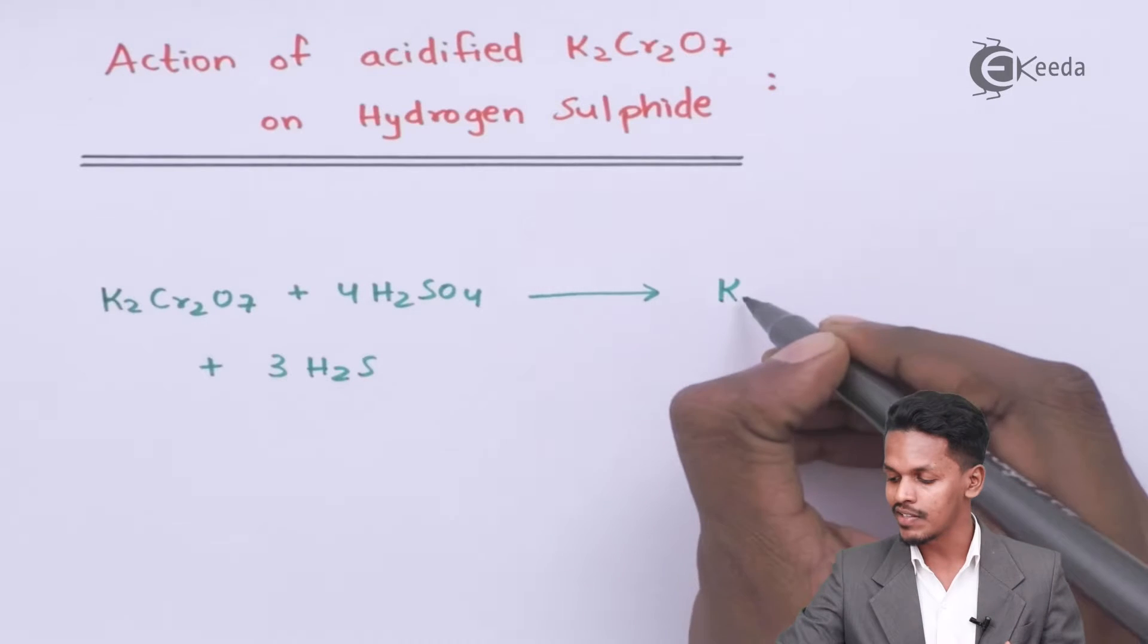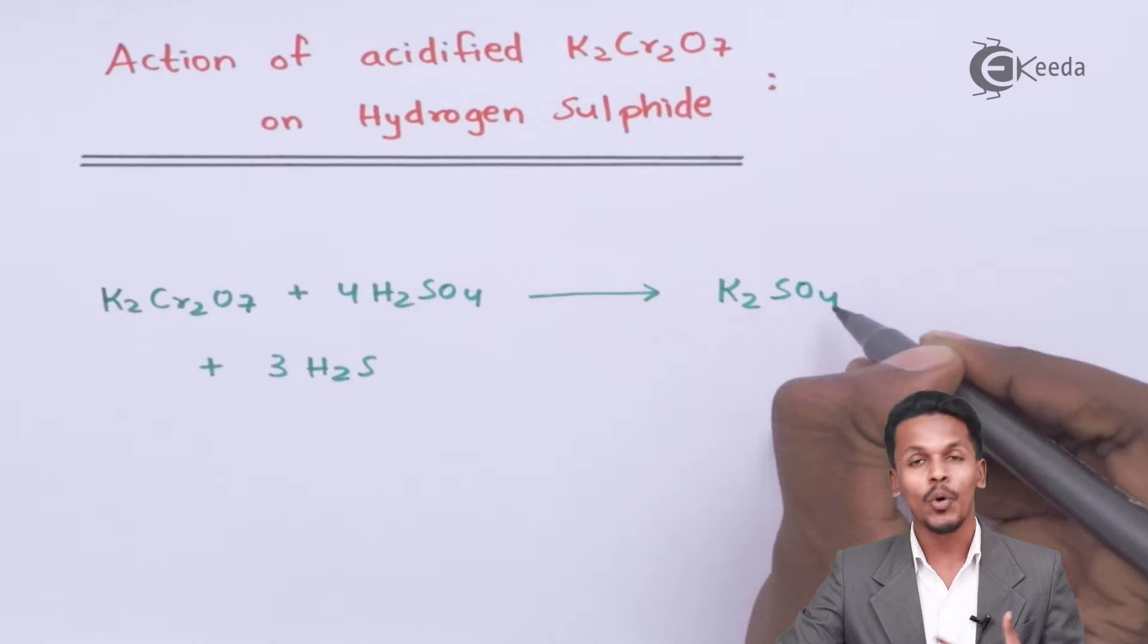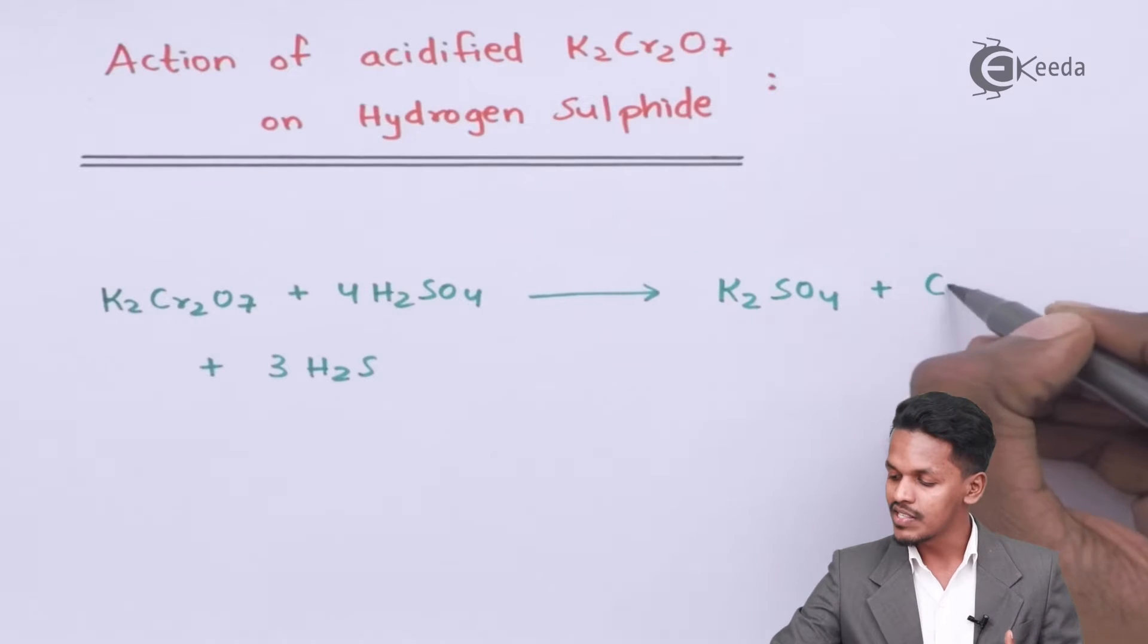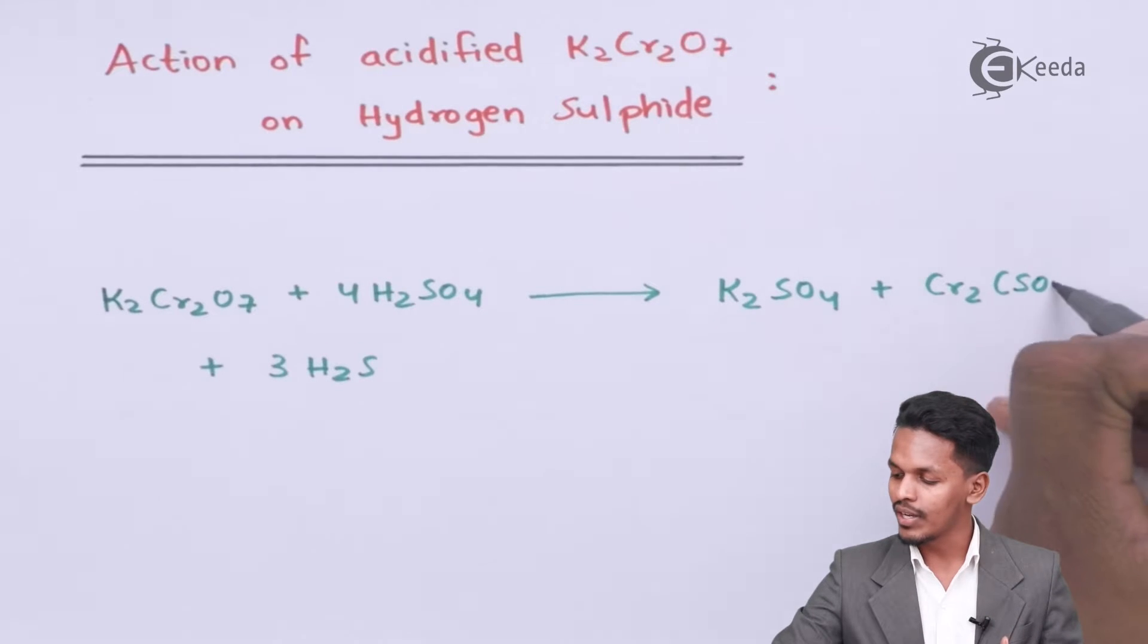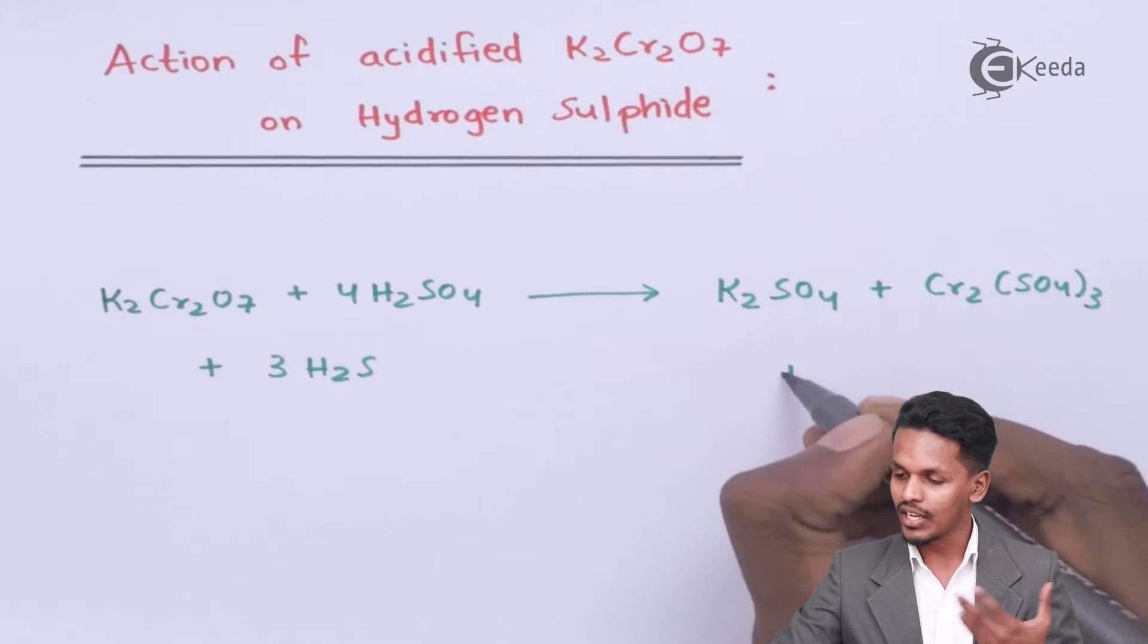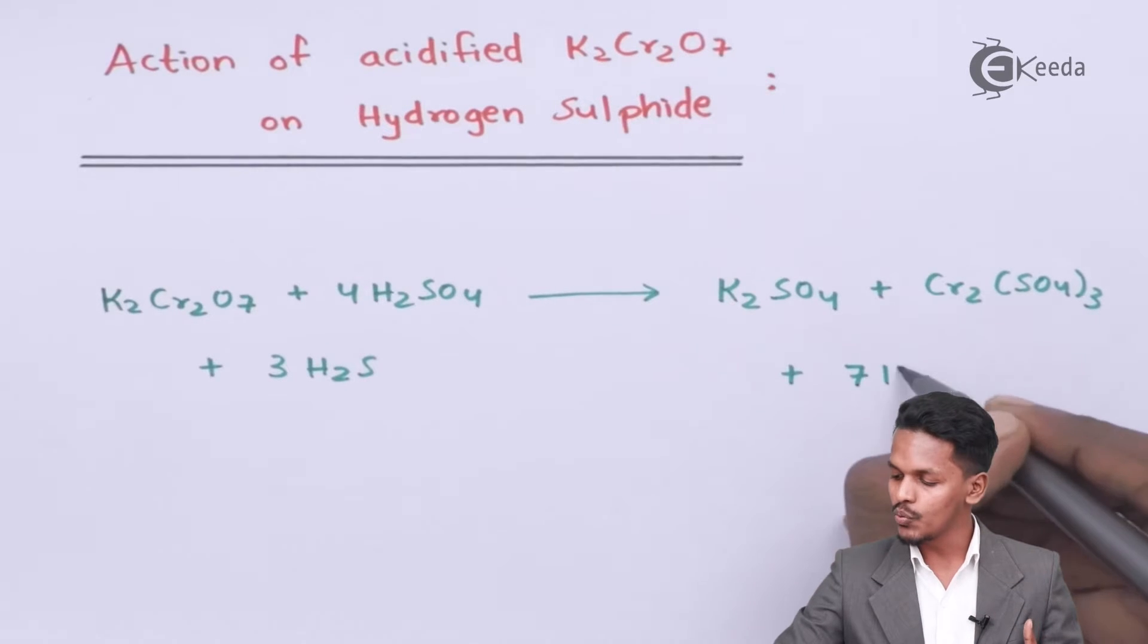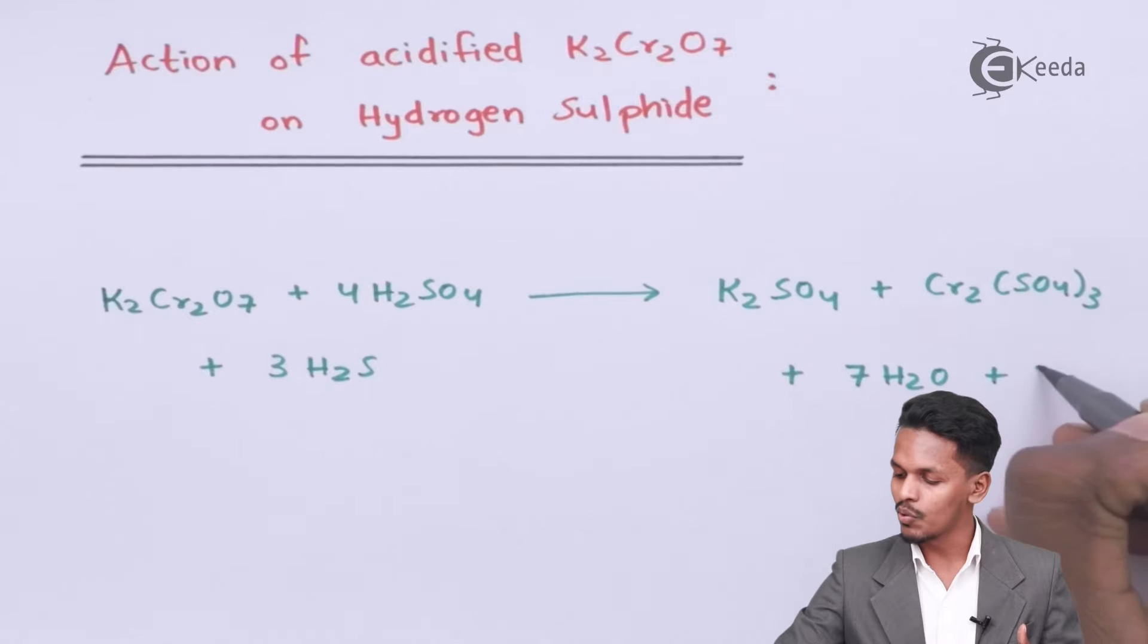So the products we get are K2SO4 (potassium sulfate), Cr2(SO4)3 which is known as chromic sulfate, 7 moles of H2O, and 3 moles of sulfur.